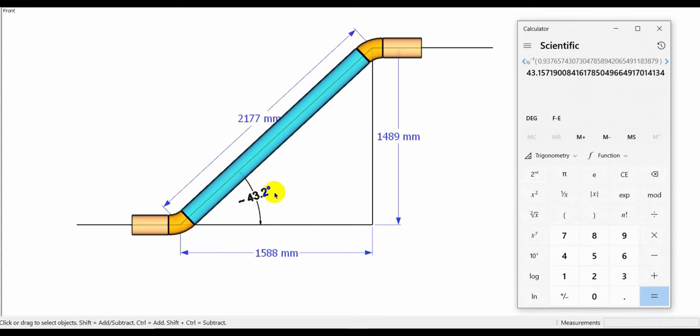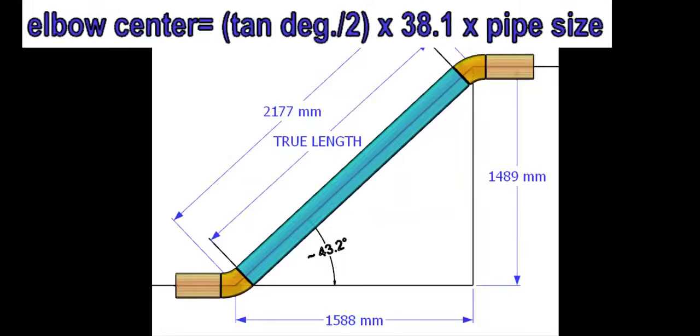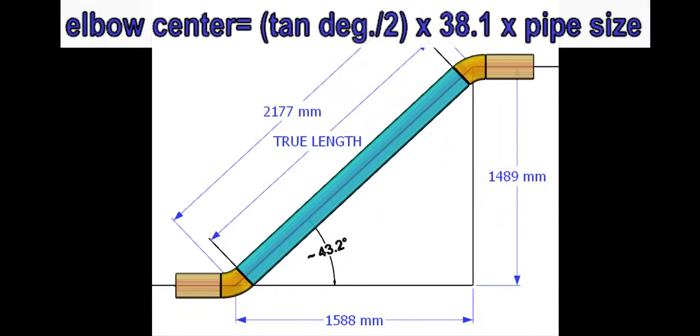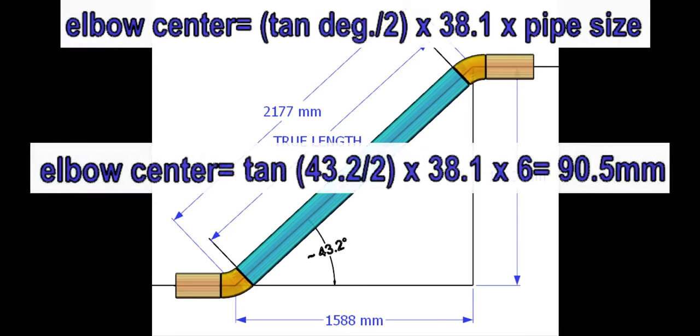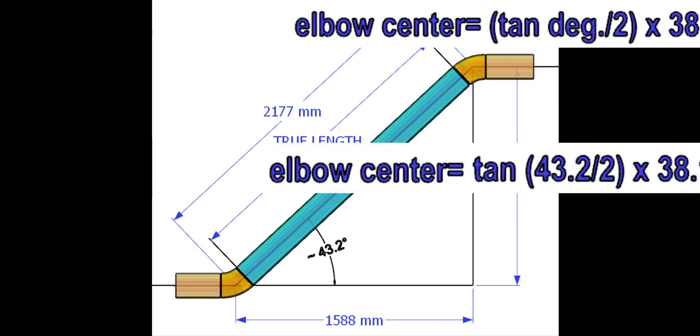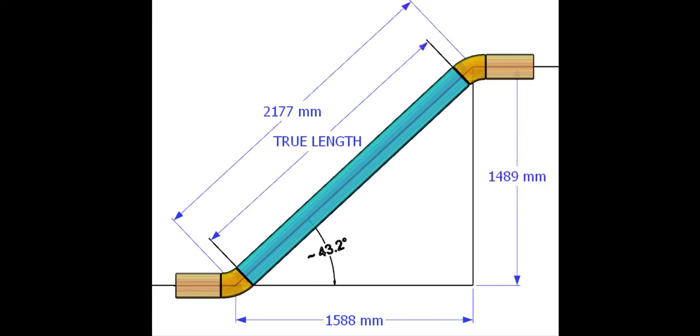Now we need to calculate the elbow center to determine the true length of the pipe. Assume the pipe size is 6 inches. The elbow center formula is degree tan divided by 2 into 38.1 into pipe size in inches. The elbow center is 90.5 millimeters.